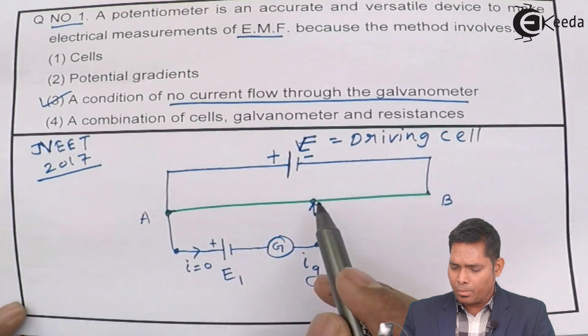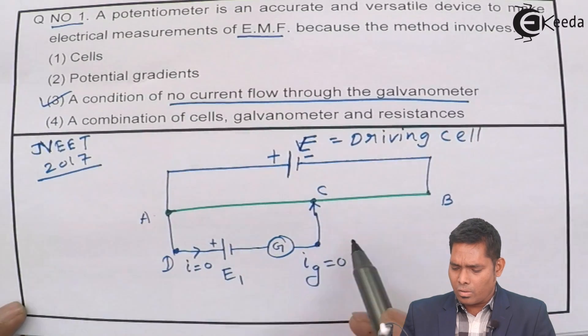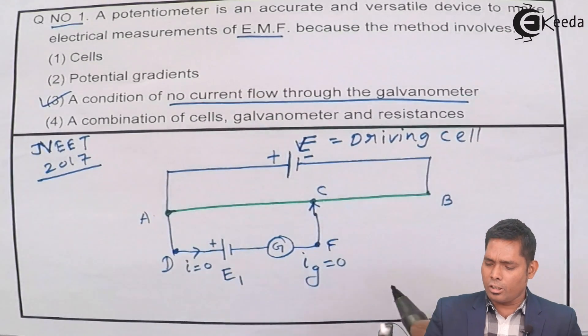suppose this point is A and this is B, suppose this is C, this is D, this is E or any say F because E we are using here.